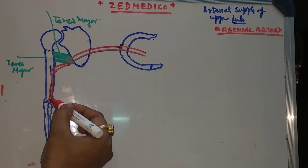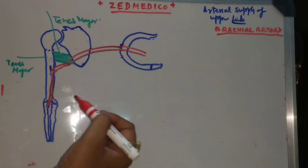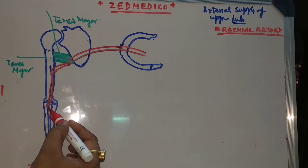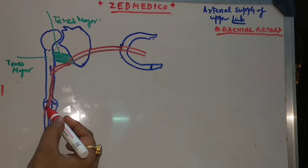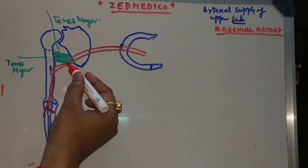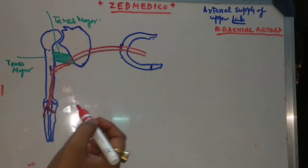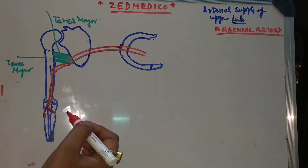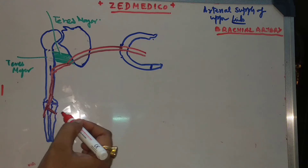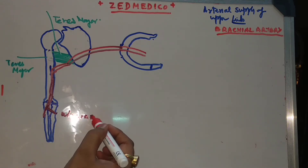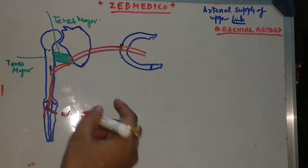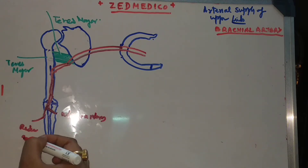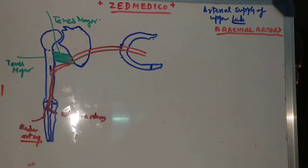The brachial artery ends at the level of the radial tuberosity, dividing into two terminal branches: the ulnar artery and the radial artery. So the brachial artery extends from the lower border of teres major to the radial tuberosity, where it divides into these two terminal branches.